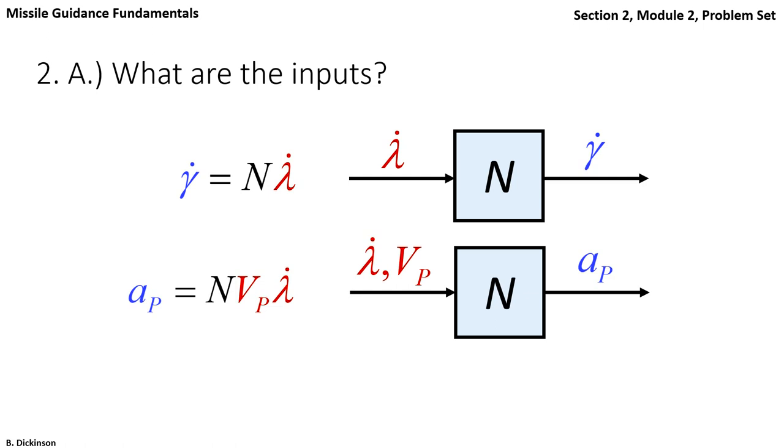Now you may be wondering, since velocity is constant, why don't we group it into the block? Technically, you could do that in a simulation context. But in more complicated simulations, VP will change. And it makes sense.